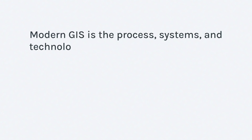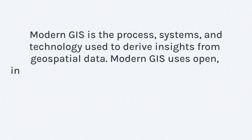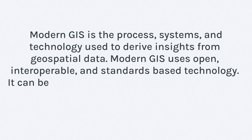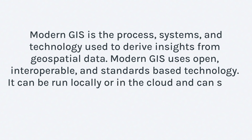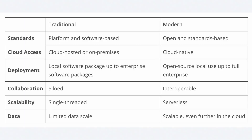So what is modern GIS and ultimately how is it different from traditional GIS? Modern GIS is the process, systems, and technology used to derive insights from geospatial data. Modern GIS uses open, interoperable, and standards-based technology. It can be run locally or in the cloud and can scale to work with many different types, velocities, and scales of data. Take a look at this chart — here's a quick comparison between the two and what you can achieve with a modern GIS versus a traditional GIS system.